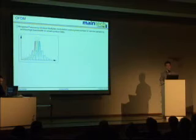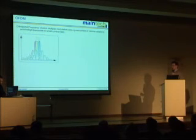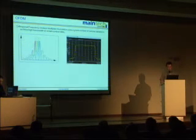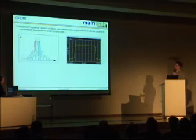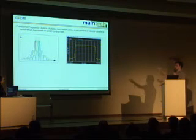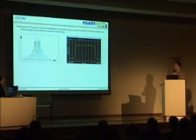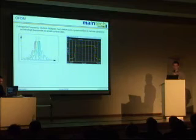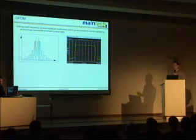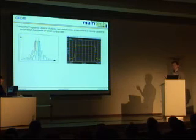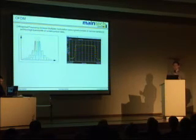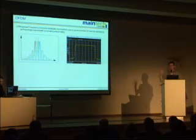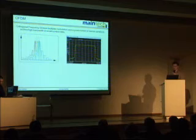Luckily, there's an operation called fast Fourier transformation which does that very efficiently. If we look at the spectrum, it just looks like a flat block — you can't see the individual carriers. You have to imagine that an 8 MHz wide spectrum contains 2,000 or 8,000 single carriers. That's why OFDM hasn't been used until recently: you can't do OFDM modulation in analog technique because you would need 2,000 separate modulators. With digital technology, you just put the data into the Fourier transformation and you're done.